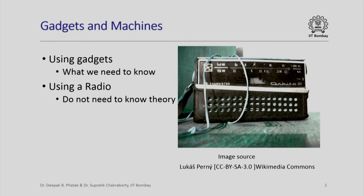Making a machine behave as we direct it is a natural human desire. We should remember a few things about using machines or gadgets. In order to make a machine do our bidding, it is not essential to know how the machine was designed or how it was manufactured. What we need to know is what the basic functions of that gadget are and how exactly to make that gadget do what we wish it to do. This is the approach we take whenever we learn to use any gadget, such as a washing machine, television, or even a simple transistor radio.